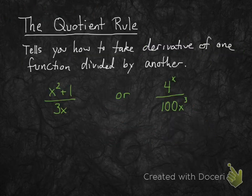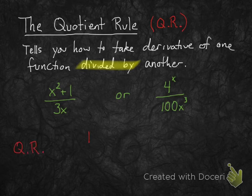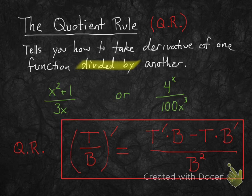The second rule we're going to go over is called the quotient rule, and this tells you how to take the derivative of one function divided by another. The examples here are x squared plus 1 divided by 3x, or 4 to the x divided by 100x cubed. We're going to abbreviate this QR for quotient rule, and it's a little more complicated than the product rule. Here's what it is in symbols: t denotes the top function and b the bottom function, and I'll explain the formula on the next slide.